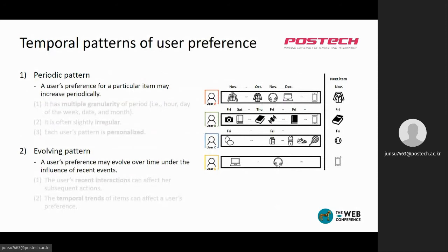The first part of our work is arranging the temporal patterns of user preference in recommender systems and their characteristics. There are two kinds of patterns in user preference: periodic pattern and evolving pattern. Periodic pattern means that a user's preference for a particular item may increase periodically because people have their own various life cycles.